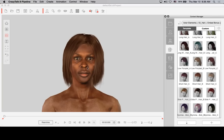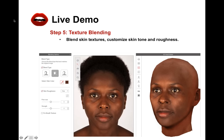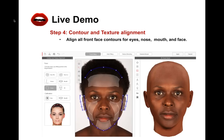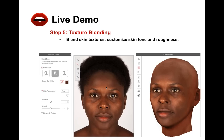That is it for the live demo. I hope this was very useful. One of the most important things is bringing in the right image. When you import an image, make sure it has a resolution higher than 2,000 by 2,000 pixels — this ensures you'll have very high details for the skin, and CrazyTalk can work with those details when generating your 3D face.